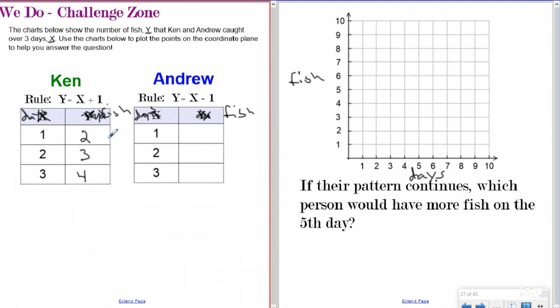So let's go ahead and graph Ken's line. I'm going to do it in green. You might not have a different color. You can just do it in pencil and pen. Or if you only have a pencil, you can do both of them in pencil. That's okay. So my three ordered pairs are one, two, two, three, and three, four.